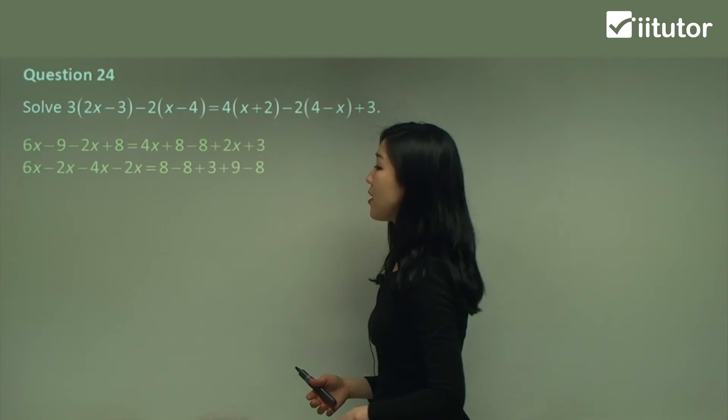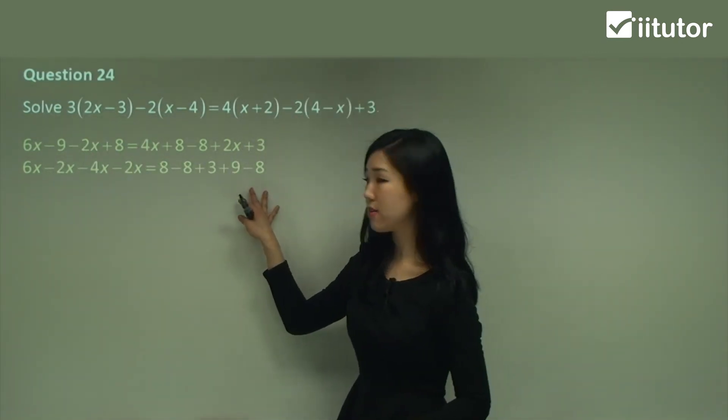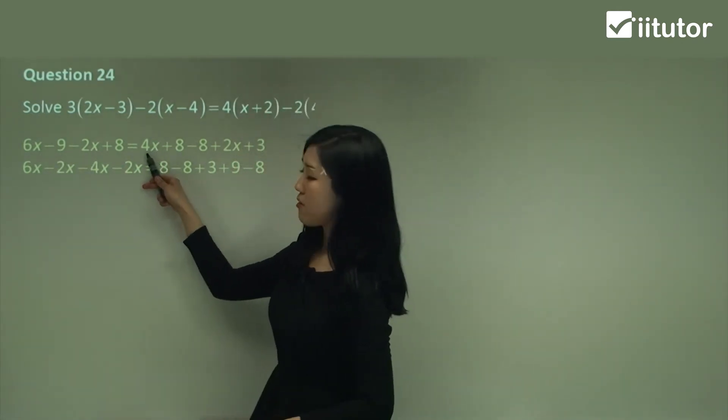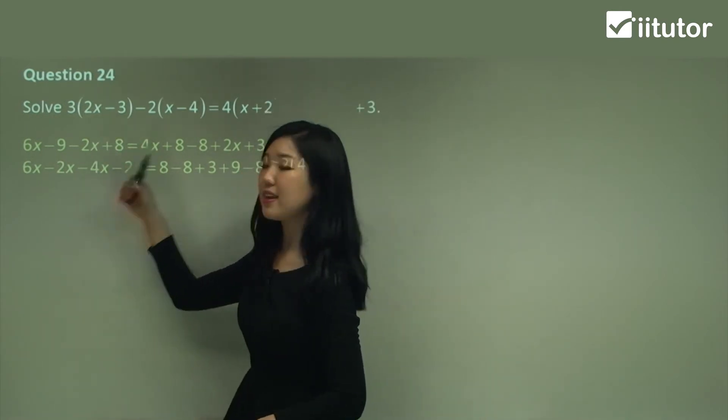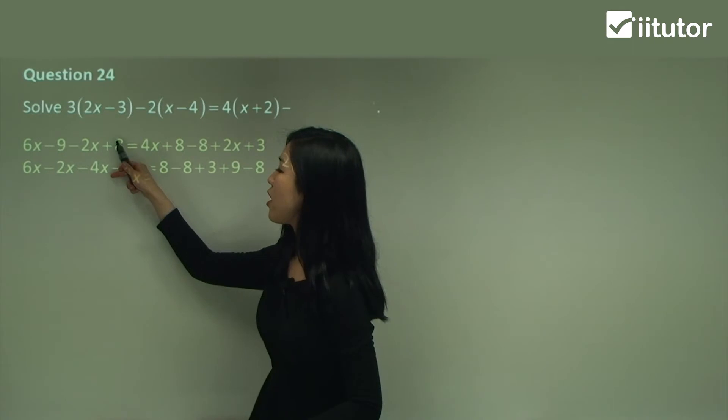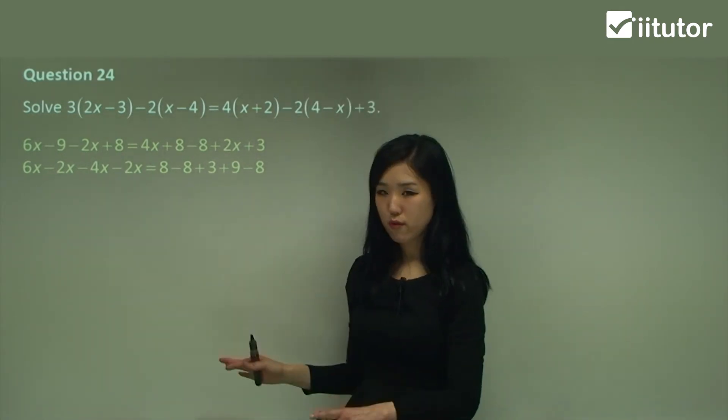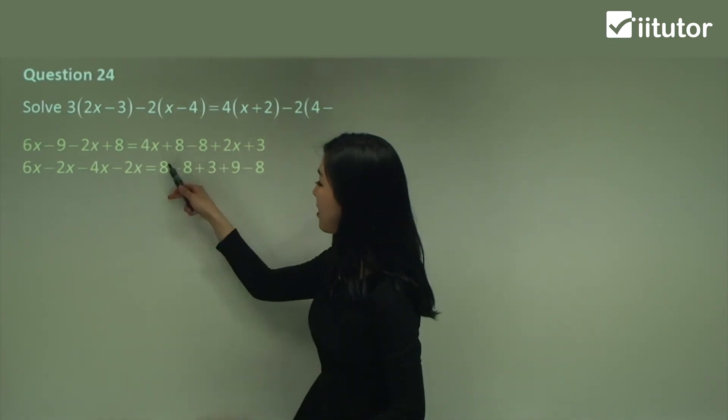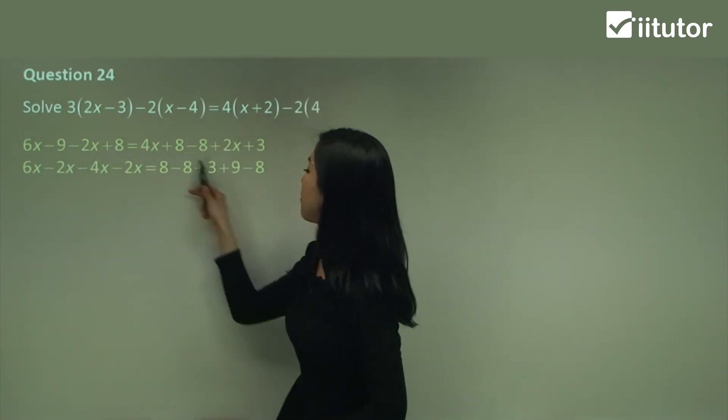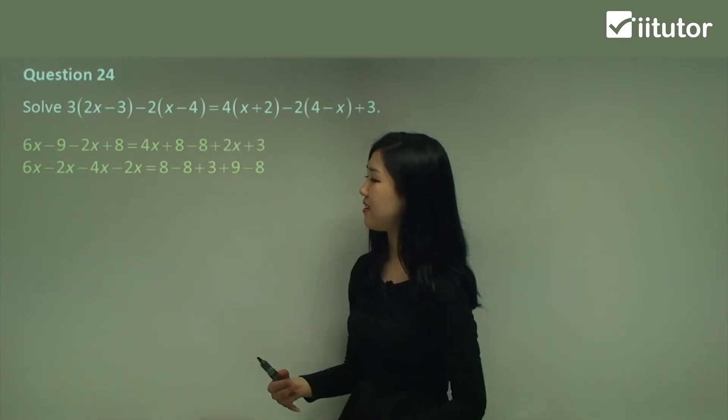Gather your like terms. I'm going to move all my x's on my left and all the constants onto my right. So I have 6x minus 2x. See how we have 4x here? Move it over by making it negative 4x. And the positive 2x here? Move it over by making it negative 2x. And then all the constants you move over to the right. So I have 8 minus 8 plus 3. And I also have plus 9 minus 8. Pretty long but you get the idea.